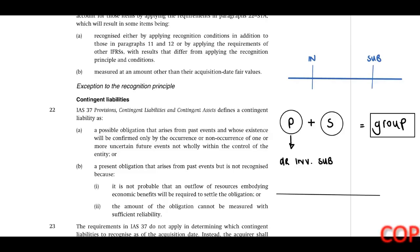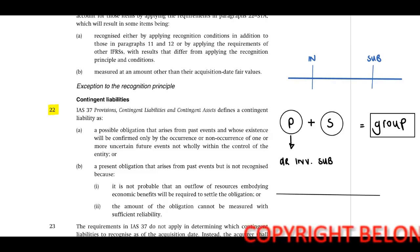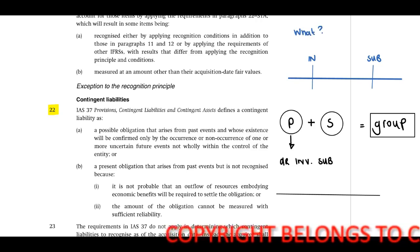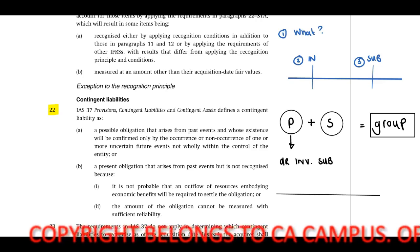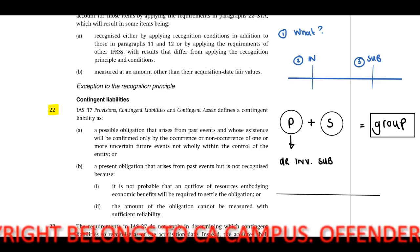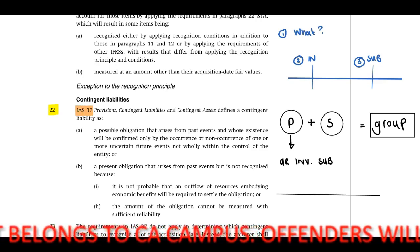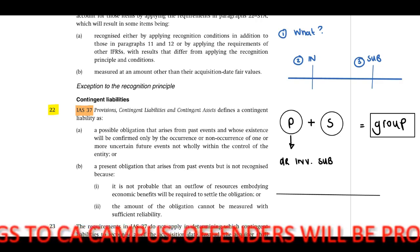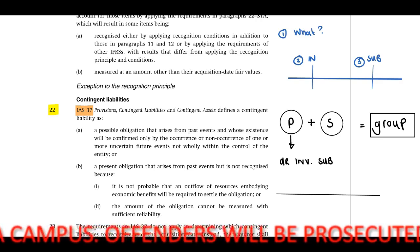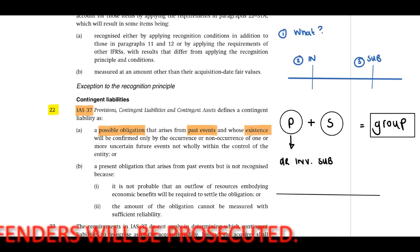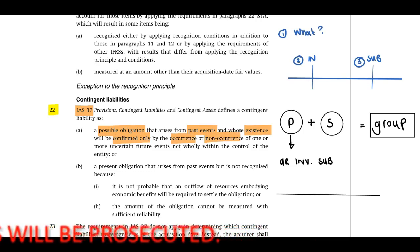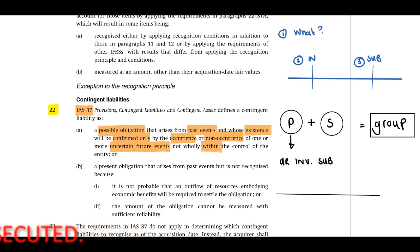Please open paragraph 22. First we need to identify what is a contingent liability — initial recognition and measurement, and subsequent recognition and measurement. In terms of IAS 37 provisions, contingent liabilities and contingent assets, a contingent liability is defined as a possible obligation that arises from a past event and whose existence will be confirmed only by the occurrence or non-occurrence of one or more uncertain future events not wholly within the control of the entity.